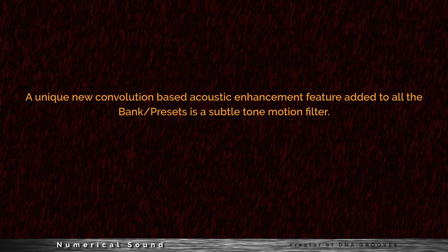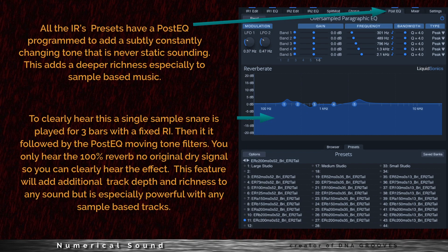A unique new convolution-based acoustic enhancement feature added to all the bank presets is a subtle tone motion filter. All the IR presets have a post-EQ programmed to add a subtly constant changing tone that is never static sounding. This adds a deeper richness, especially to sampled bass music. To clearly hear this, a single sample snare is played for 3 bars with a fixed reverb impulse, then followed by the post-EQ moving filters. You only hear 100% reverb, no original dry signal. This feature will add additional track depth and richness to any sound, but is especially powerful with any sampled bass track.